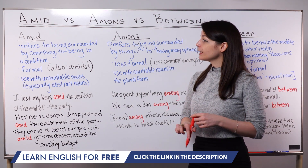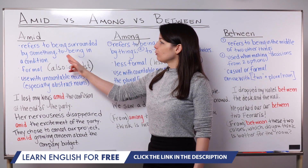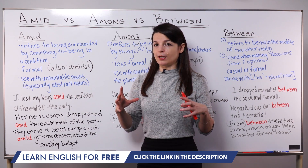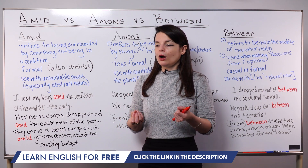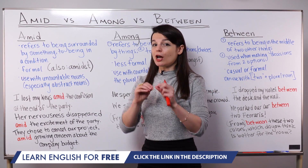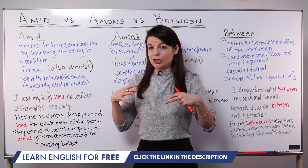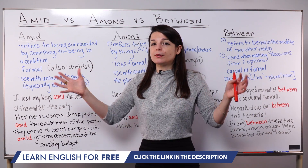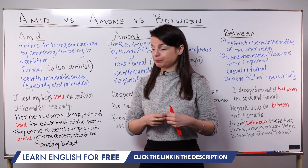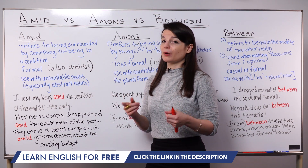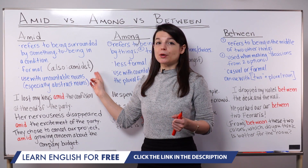I want to begin this lesson by talking about the word amid. Amid refers to being surrounded by something, and it refers to being in a condition. When we use the word amid, it's not like we're talking about many different objects, but rather we're talking about being in a condition or being in a situation. Amid is a rather formal word — from these words I'm going to talk about today, amid is the most formal.